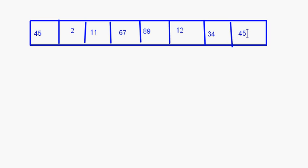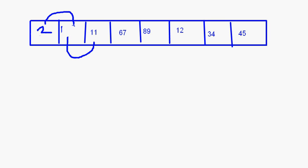First, 45 and 2 will be compared. Since 2 is less than 45, this will become 2 and this will become 45. Next comparison: 45 and 11. After the swap, 45 will become 11 and 11 will become 45.